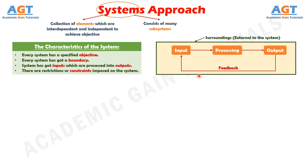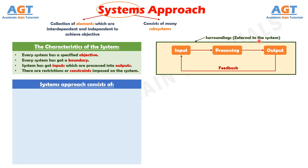This boundary shows the system surroundings that are external to the system. The systems approach consists of systems analysis, systems engineering, and systems management. It is a powerful tool for solving large, complex problems involving men and machines. A key feature of the systems approach is its emphasis on analyzing the interrelationships among various elements of the system, taking a holistic and integrated view and considering the influence of elements on system performance.